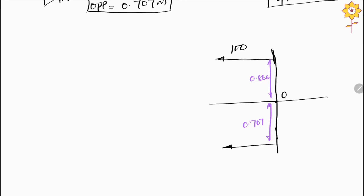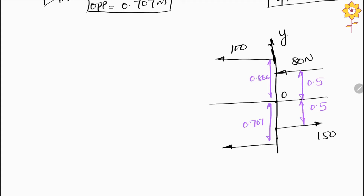The second force is 80 N, drawn accordingly. The bottom force is 150 N. The distance for the 80 N force is 0.5 meter and for the 150 N force is also 0.5 meter. We have now converted this into a simpler diagram, and we can find out the resultant force and locate it.